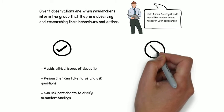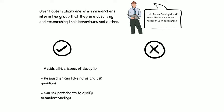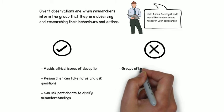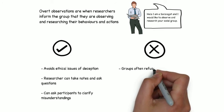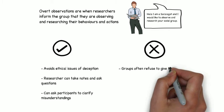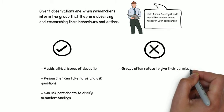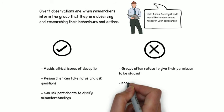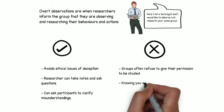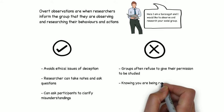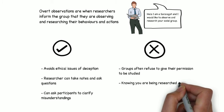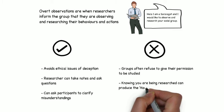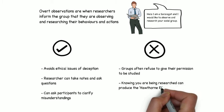However, there are two major disadvantages of overt observations. First, a group may simply refuse to give you their permission to study them — for example, think about criminal gangs and how many would allow someone to observe and document their criminal activities. Second, knowing you are being researched is likely to cause the Hawthorne effect, where people will act differently around the researcher, thereby making the observations invalid.